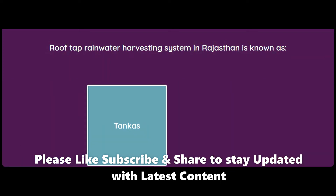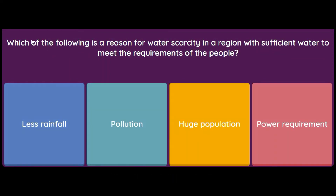Which of the following is a reason for water scarcity in a region that has sufficient water to meet the requirements of its people? The options are: less rainfall, pollution, huge population, or power requirement. The answer is pollution — because even if a lot of water is available in a region, if it is polluted it is of no use, which leads to water scarcity.